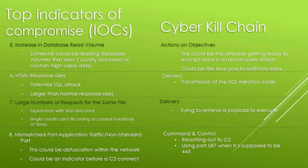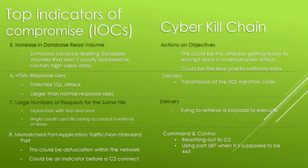Next: large numbers of requests for the same file. Lots of exploration with trial and error is necessary when conducting an attack. An IOC in this situation may look like a singular credit card file being accessed hundreds of times. This could fall into the delivery step, where an attacker is trying to retrieve a payload to execute. Another IOC is mismatch port application traffic and non-standard ports. An attacker will use common ports such as HTTP, HTTPS, SSL/TLS, or DNS as a foundation to create a C2 channel. An example would be an attacker using HTTPS over port 8088 or port 587, when it's supposed to be port 443. These can be identified by sifting through log collections, and this is considered the command and control phase of the cyber kill chain.